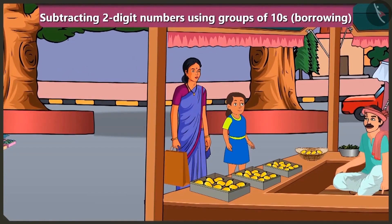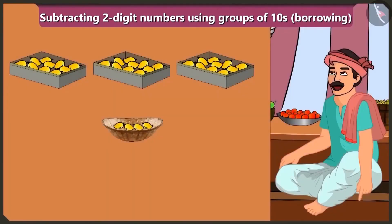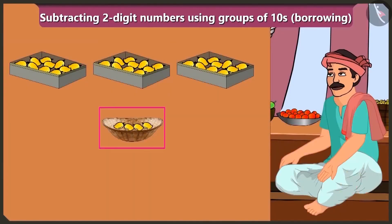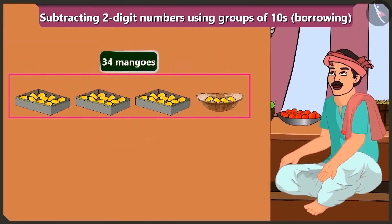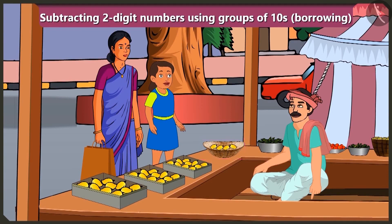Mommy, look, we can get mangoes from there. Brother, how many mangoes are there in one box? There are ten mangoes in one box. I have three tens and four ones, means thirty-four mangoes. How many mangoes do you want? I want eight mangoes. Mommy, the mango seller has only four loose mangoes. So how will he give us eight mangoes?